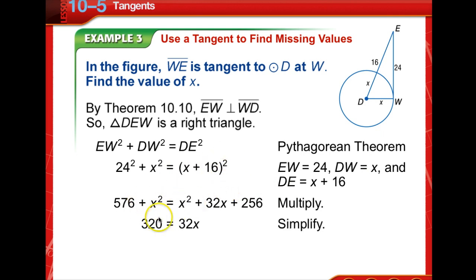You notice the X squares are going to cross out. You subtract X squared from both sides, so you have no more X squared. You subtract 256 and then divide by 32. So X is equal to 10.